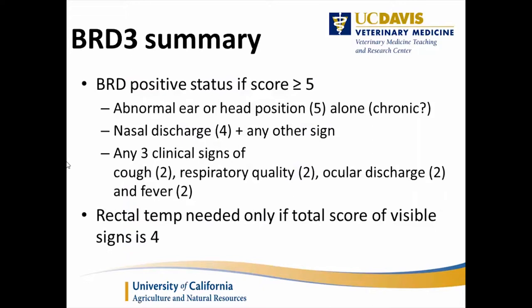In summary: if a calf shows an abnormal ear position — an ear droop or head tilt — that's already a score of 5, meeting the cutoff. That scenario indicates either the calf has had BRD for a while or is about to show more signs. For nasal discharge, that's a score of 4, so one additional clinical sign is needed to reach BRD status. And if a calf shows 3 of the remaining clinical signs, that also constitutes BRD status. Rectal temperature only needs to be taken if the score is already 4, since only then can it tip the scale above the cutoff of 5.